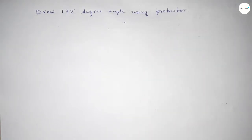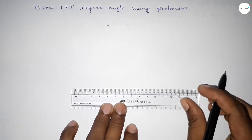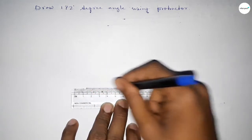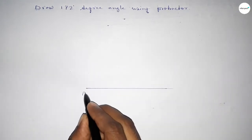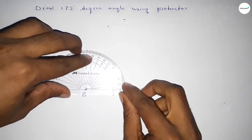First of all, we have to draw here a straight line of any length. So first drawing here a line. Next taking here point B and here point C. Now putting the protractor on the point B perfectly.